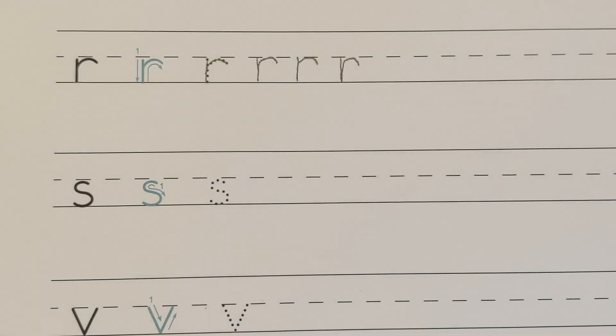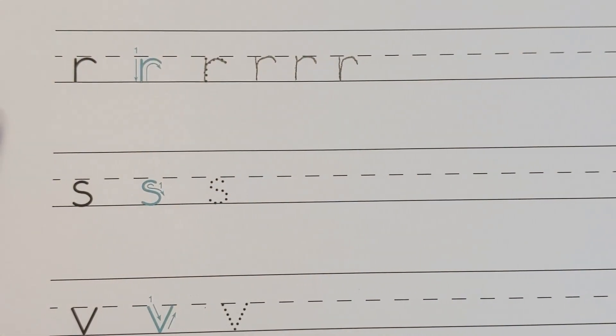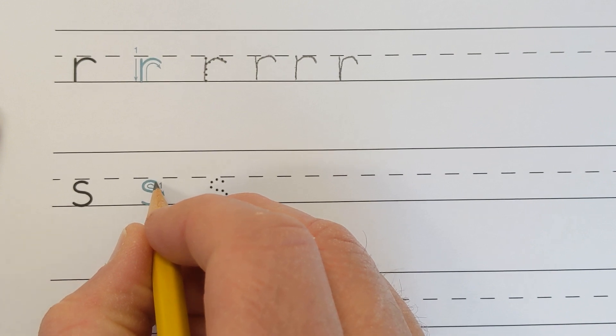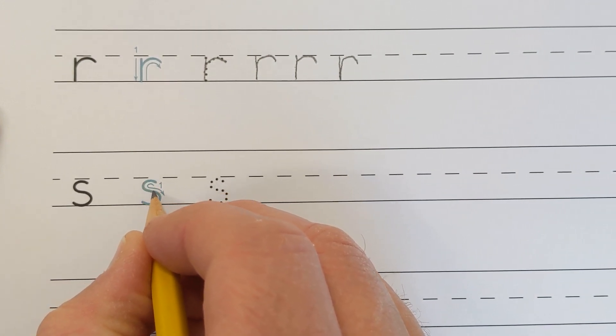Watch as I write the small letter S. The steps are, first, beginning at the top, make a half circle while moving your pencil to the left.